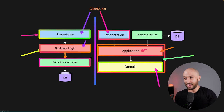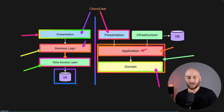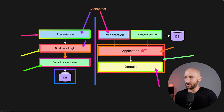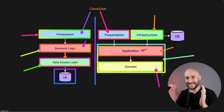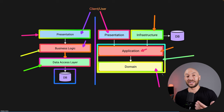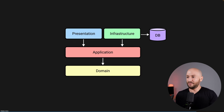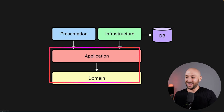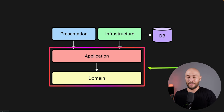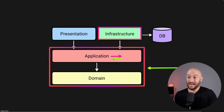Unlike the layered architecture where the database is at the bottom and all dependencies point towards it, in clean architecture these concerns sit in the infrastructure layer. That's why it's called a domain-centric architecture — the domain is in the center, and all dependencies point towards the domain. You might wonder: how can the core logic not have a dependency on the database, if at some point we'll want to access the database from the use case or domain? How is this possible if there's no dependency the other way around?